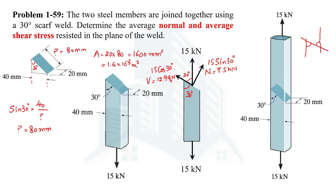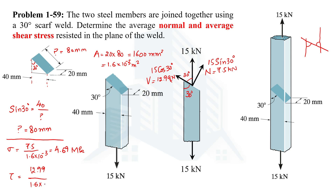We have the shear force, the normal force, and the shaded area on which these forces are acting, so now we can calculate the normal and shear stress at the plane of the weld. The normal stress = N / A = 7.5 kN / (1.6 × 10⁻³ m²) = 4.69 MPa. The shear stress = V / A = 12.99 kN / (1.6 × 10⁻³ m²) = 8.12 MPa.